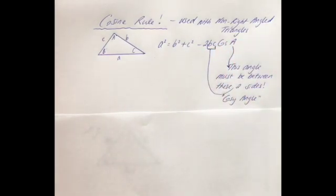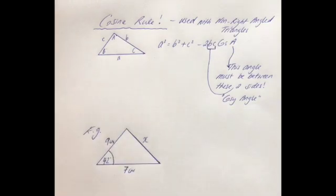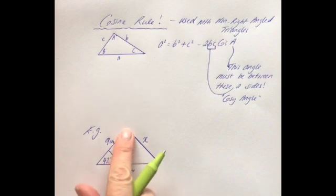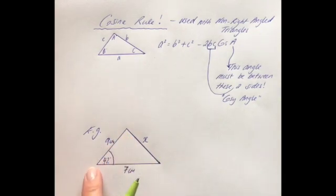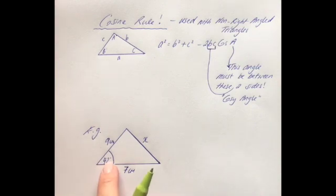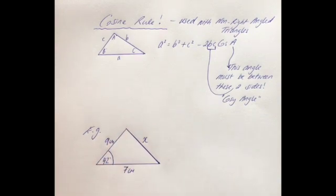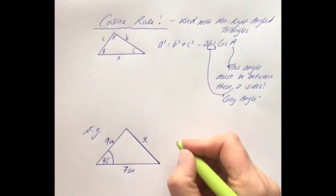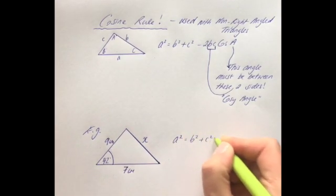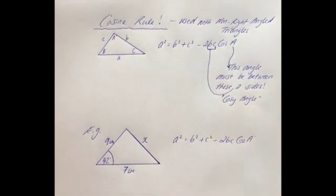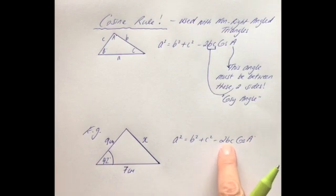Let's jump straight to an example. We're looking for side length x, we have a 9 cm length, a 7 cm length, and the angle 42°. Straight away we can spot that the 42° is nice and cozy between those two sides, so even though it's a non-right-angled triangle we're going to use cosine rule. Writing out the rule for yourself is always the first step, and taking it down accurately is really important.